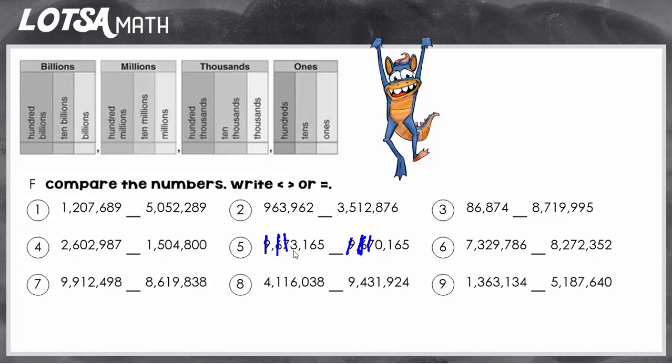In the thousands place I see a three and a zero. Finally they're different so I can stop there and just compare the numbers. Since three is greater than zero, this number is going to be greater than that number.